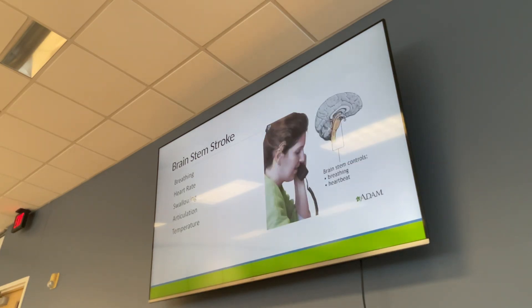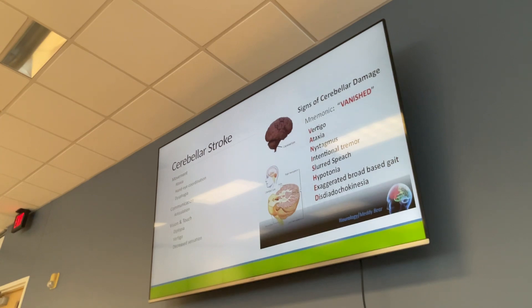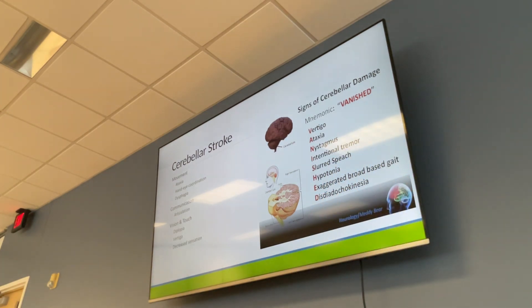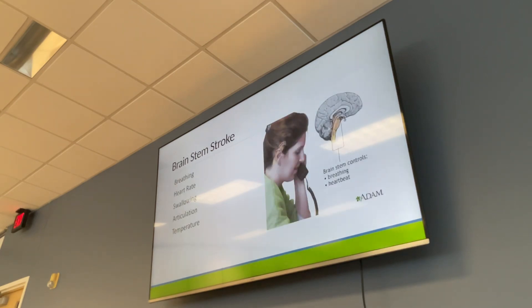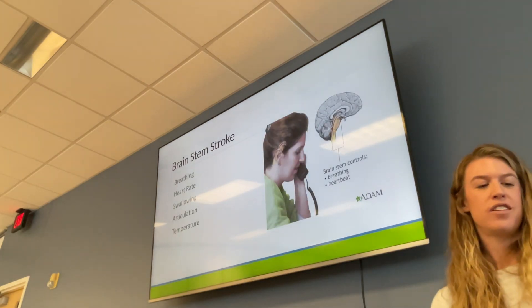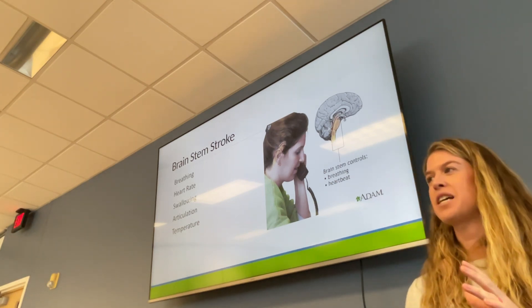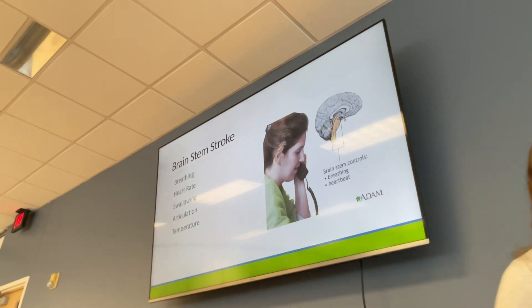Dysdiadochokinesia — spelled D-I-S-D-I-A-D-O-C-H-O — is a key finding in cerebellar stroke. Brain stem strokes usually have poor outcomes because the brain stem controls breathing, heart rate, temperature, and swallowing, making these strokes often fatal depending on timing.